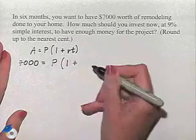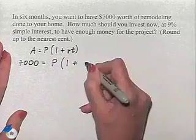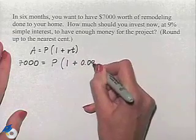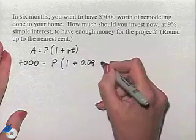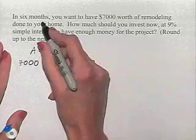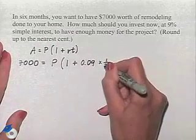That's 1 plus. Our interest rate is 9%. Changing that to decimal format is 0.09. We want to have that amount in six months, so our time is going to be one half of a year.